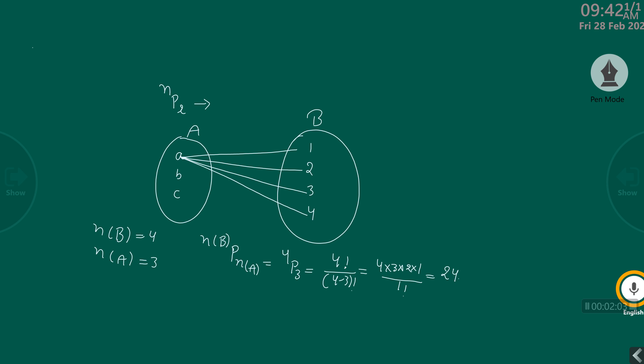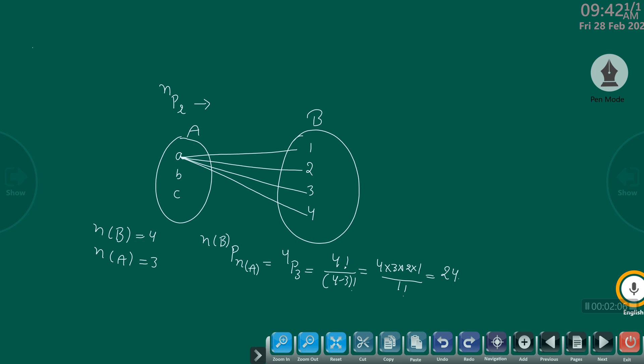After that for B, if A connects to 1, for B you have 3 choices. So for A you have choice 4, for B you have choice 3. You can connect B like this.